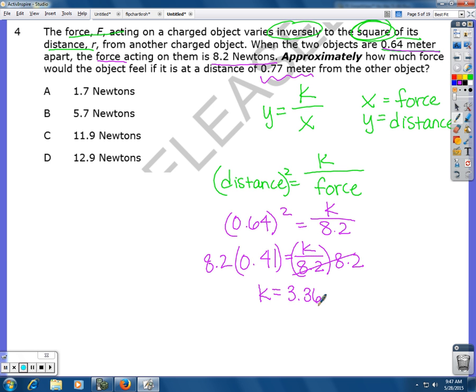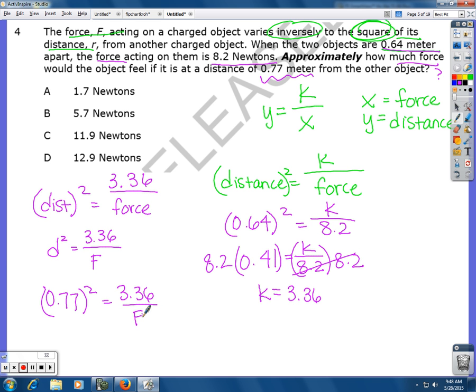So, now I'm going to go back to my equation. So, distance squared is our constant which now we know 3.36 over the force. Another way we could write that would be distance squared equals 3.36 over the force. Now, they give us the distance. It says how much force. That's what we're looking for. Would the object feel if it is at a distance of 0.77 meters? So, I'm going to take 0.77 meters. That's the distance. And plug it in for my distance. And then I'm going to solve for the force.